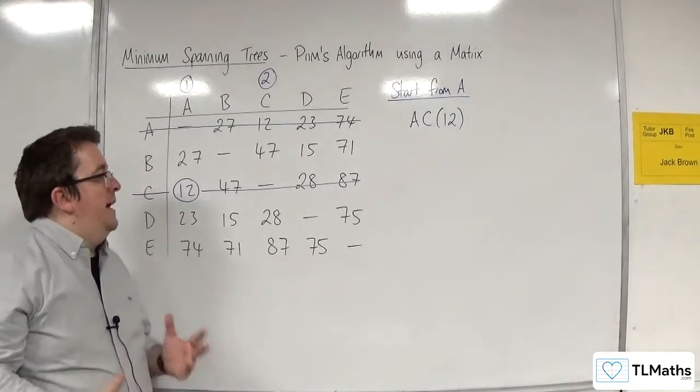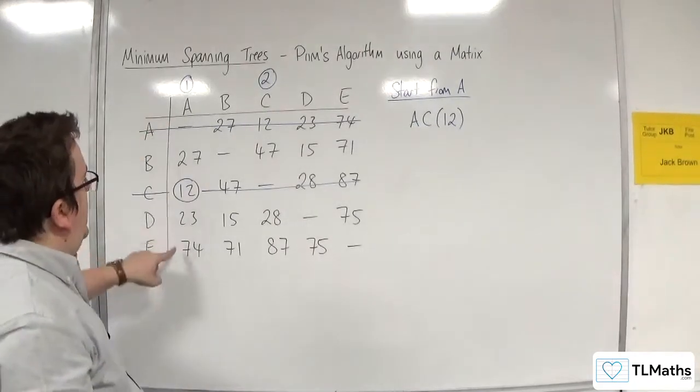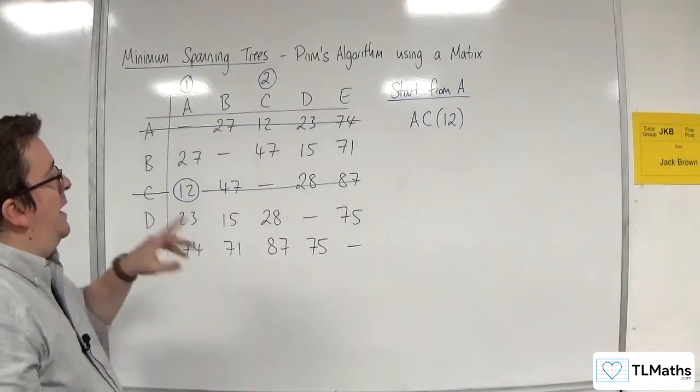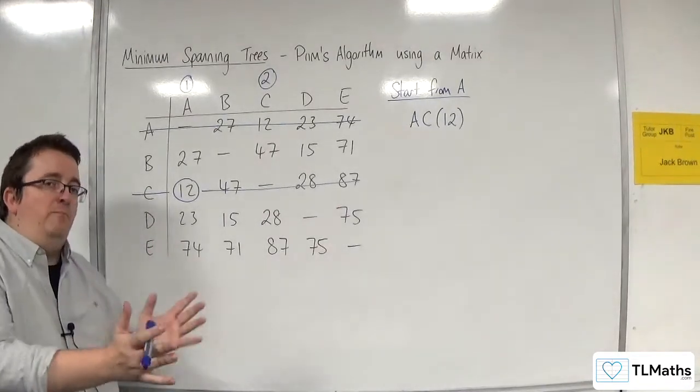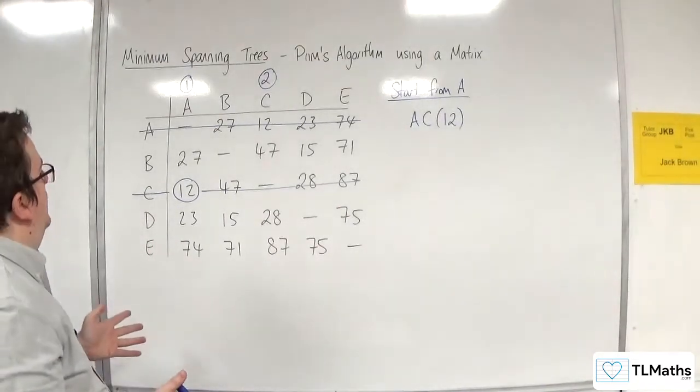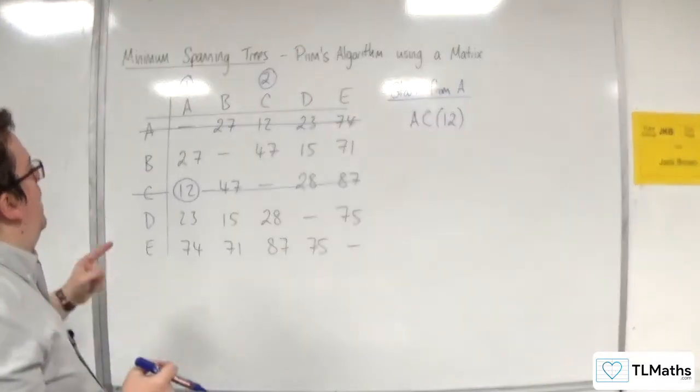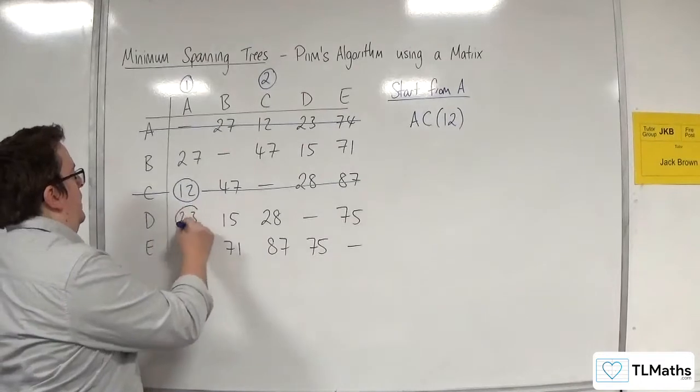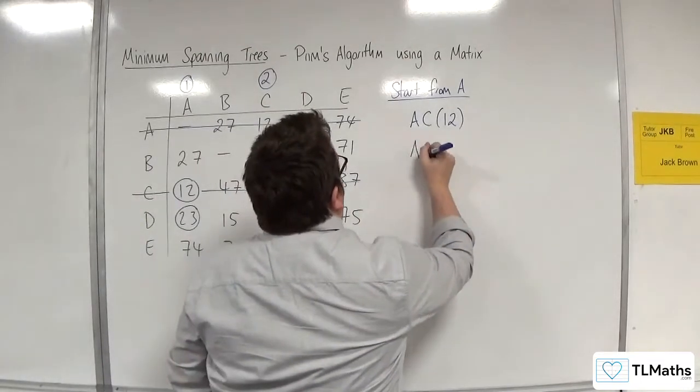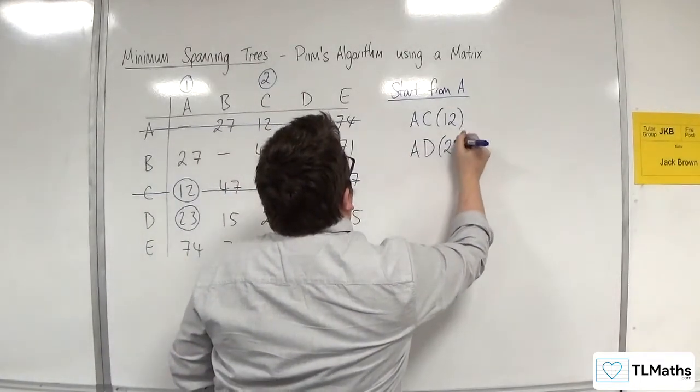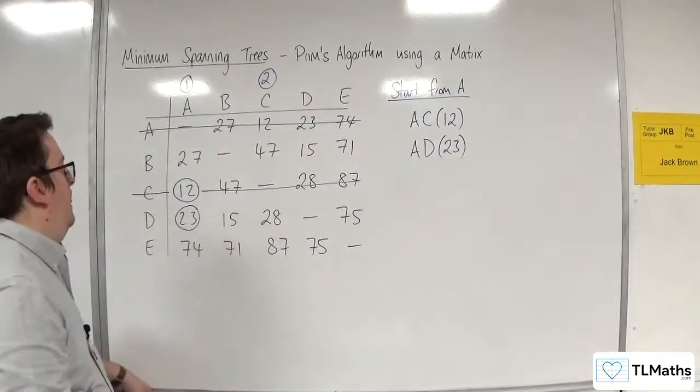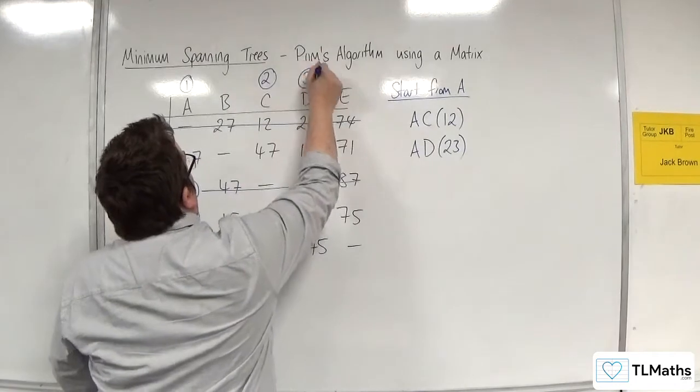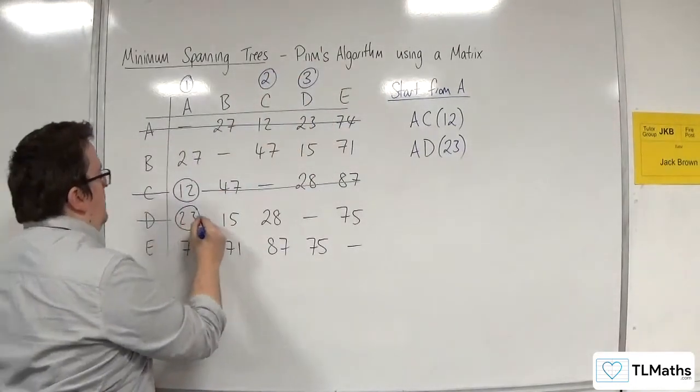You're now going to look down both A and C. So you're going to look down both columns, because you're looking at all the edges coming out of both A and C. So you pick the least one, and in this case it would be 23. So A is now connected to D, 23. And we've now connected D, so we're going to put a number 3 at the top of D and we delete the rest of the row.